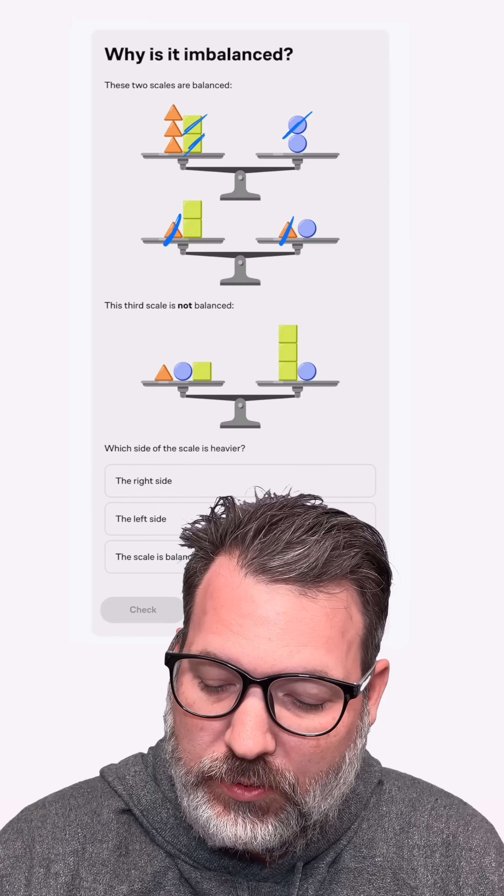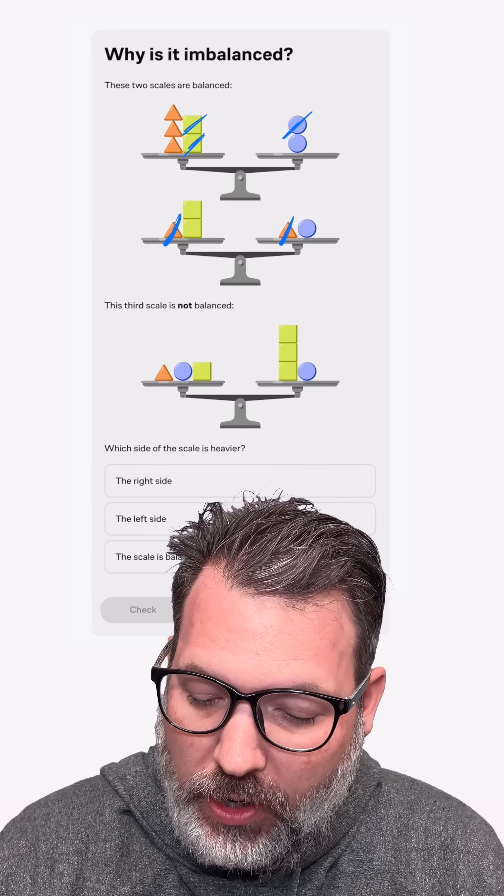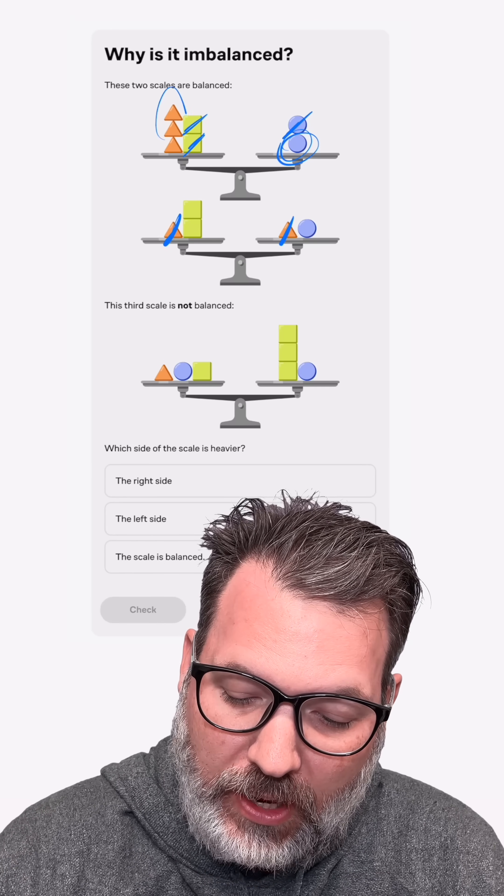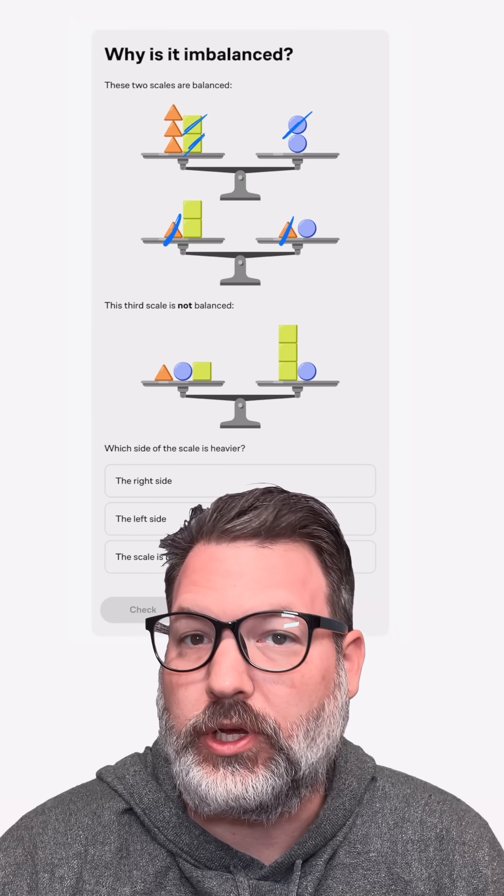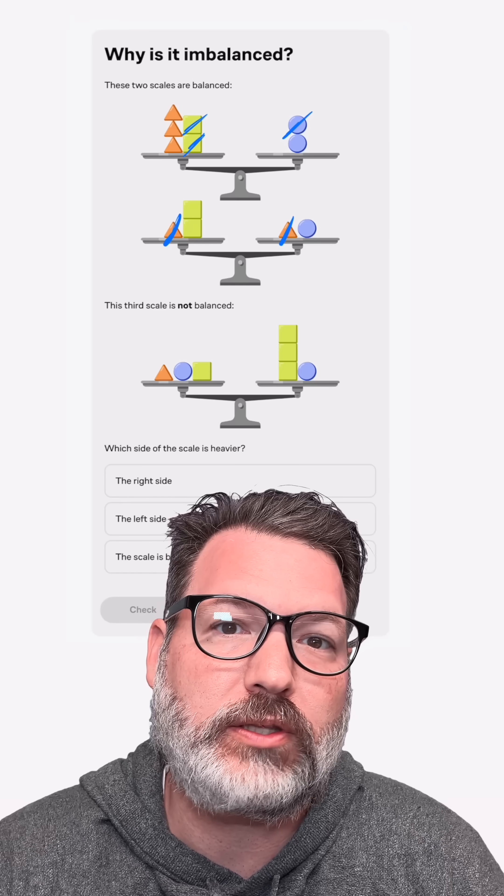And so I have several different equivalencies right now. A single circle is the same as two squares, but also a single circle is the same as three triangles. So I could furthermore conclude that two squares weigh the same as three triangles.